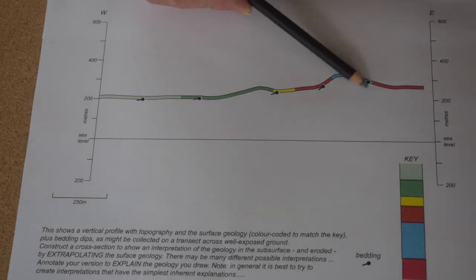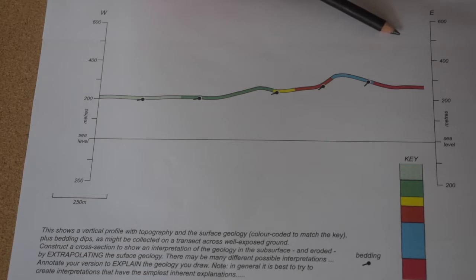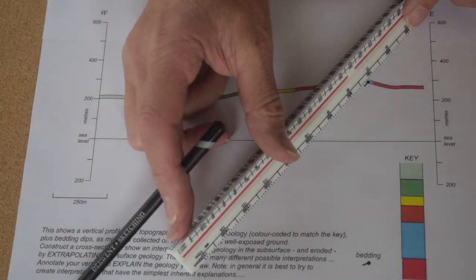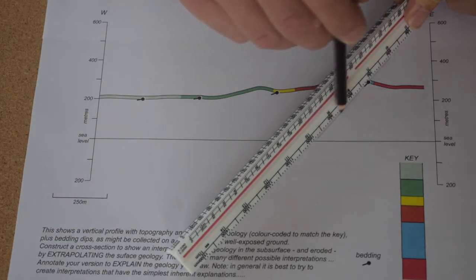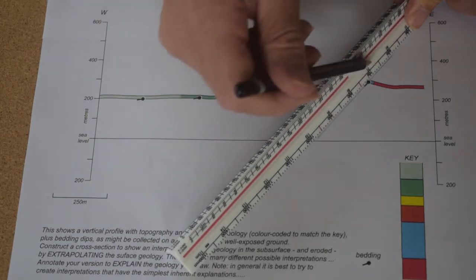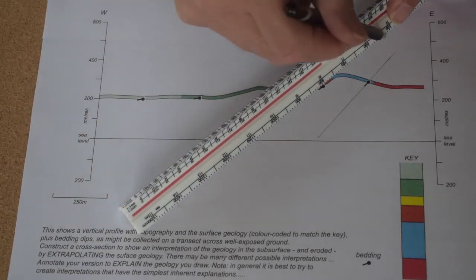So the idea is to try and project the surface geology into the subsurface and indeed into the sky where it's been eroded and the only thing we've got to go on in terms of the direction that we're going to project boundaries is the bedding orientation shown by these tadpoles. So what some people do is they'll line a ruler up and rather carefully draw lines to show how the bedding apparently projects into the subsurface. Something like this.